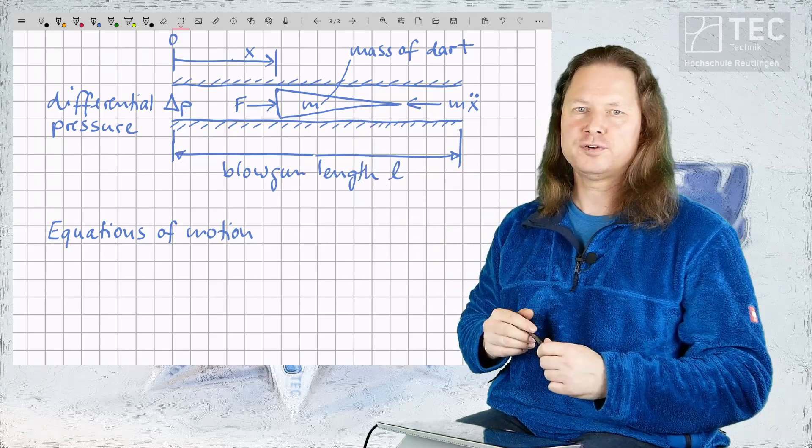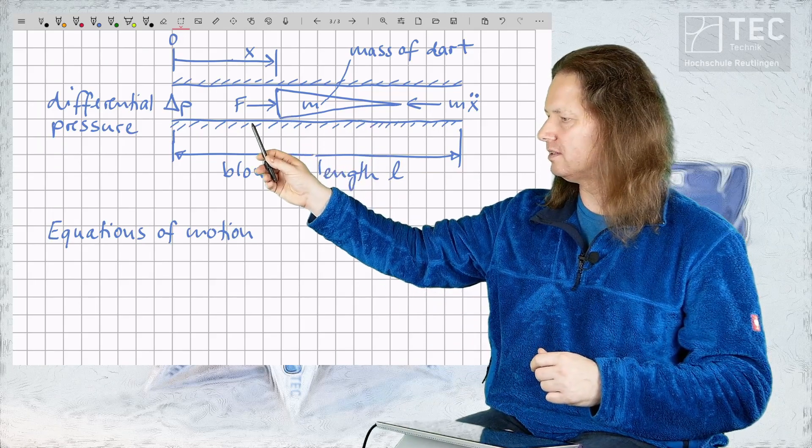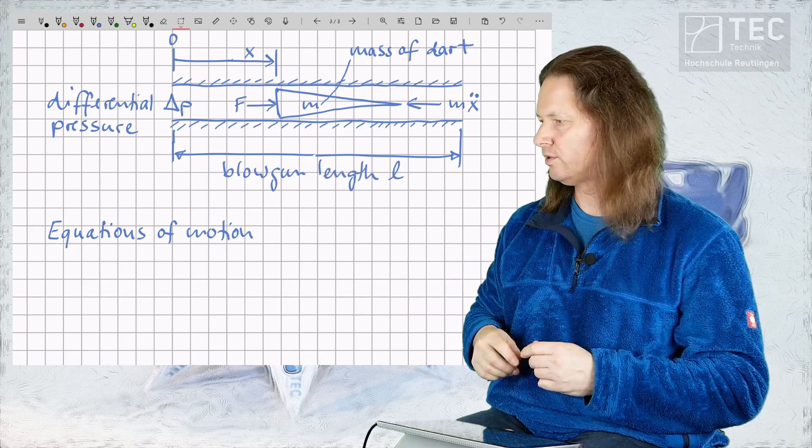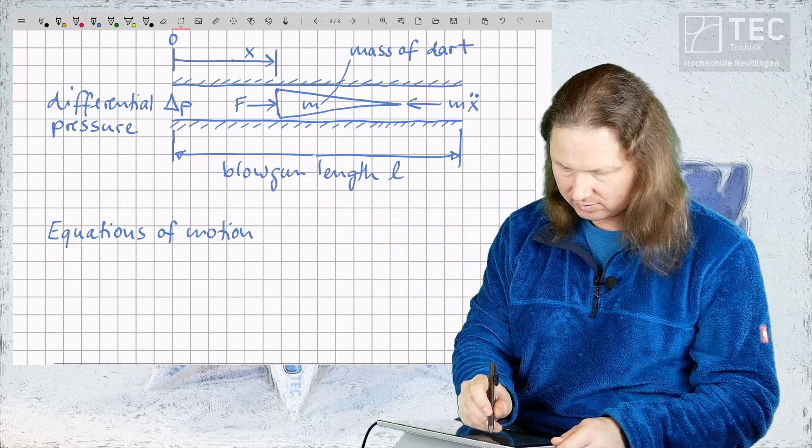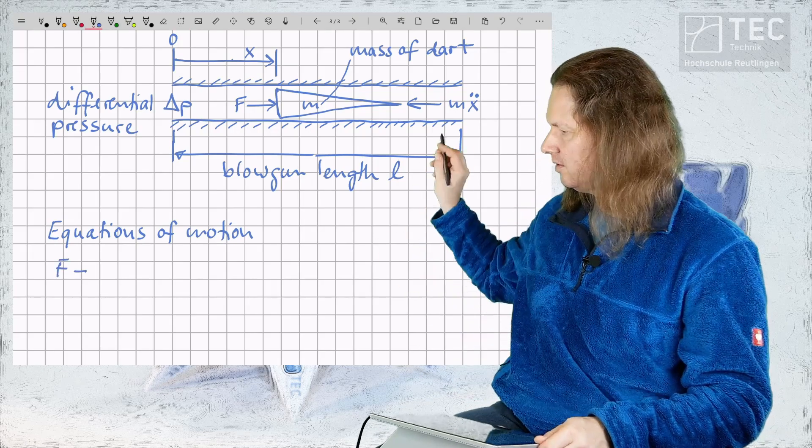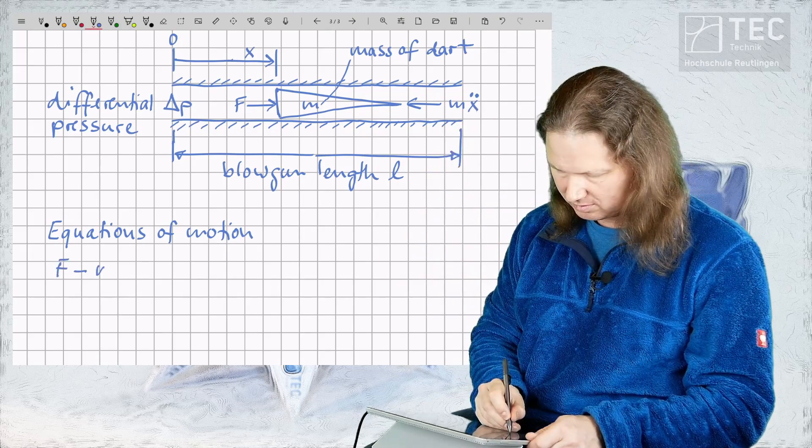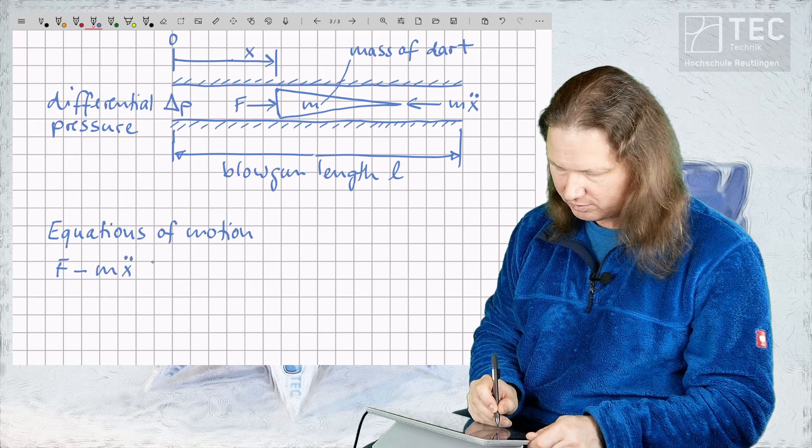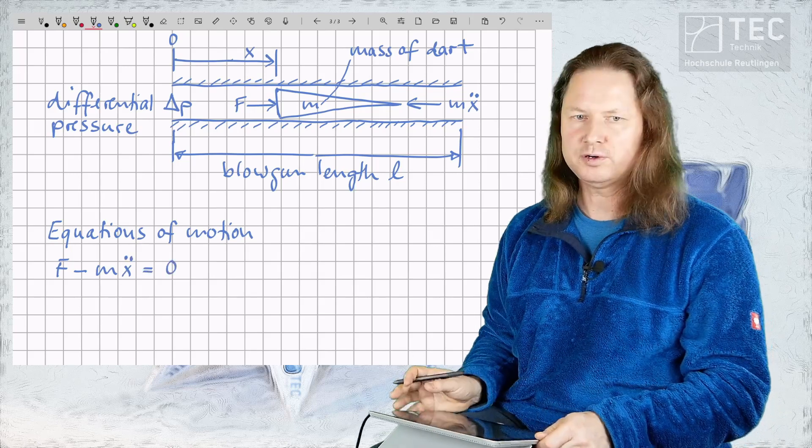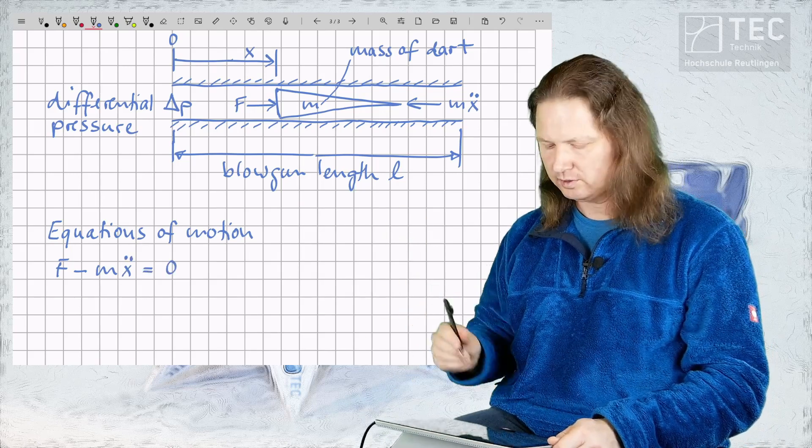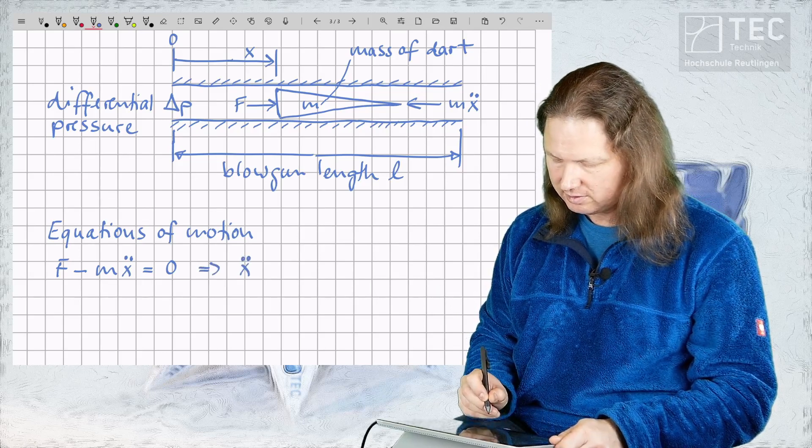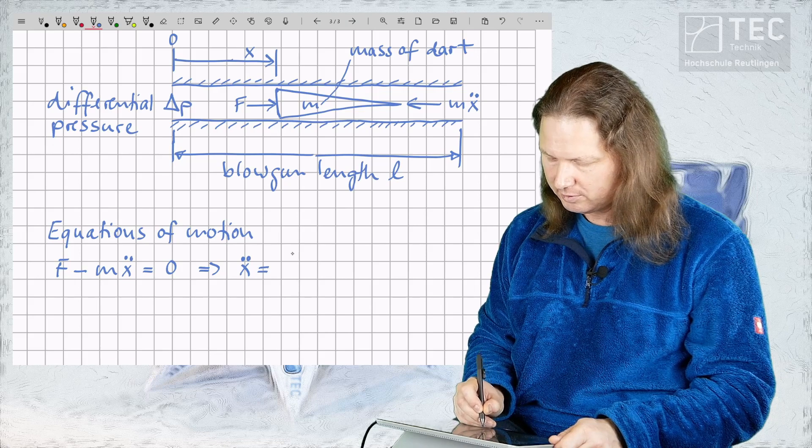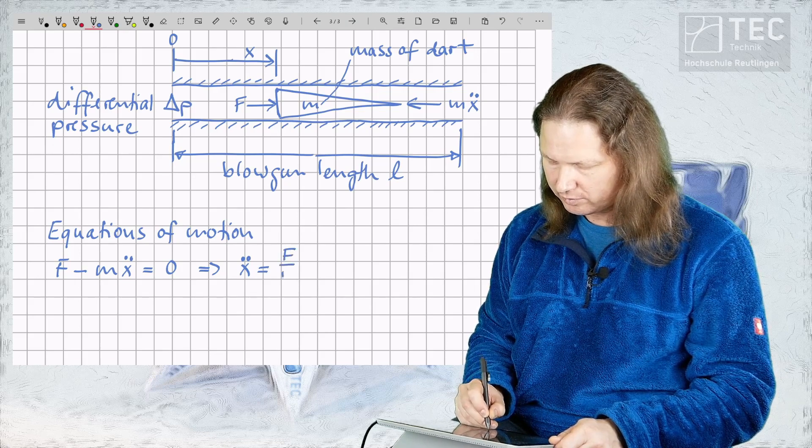The equilibrium of forces on the dart demands that the sum of all forces is equal to zero. So we have F minus the inertial force M x double dot is equal to zero. We can solve this equation for the acceleration x double dot which gives x double dot is equal to F over M.